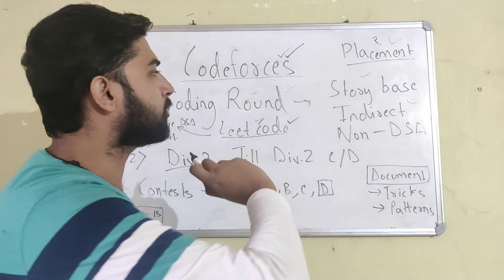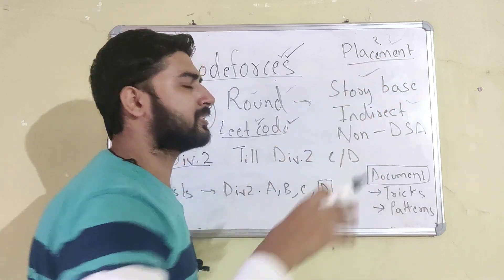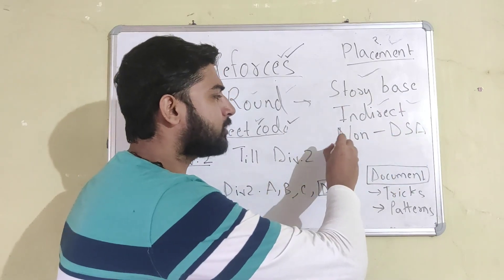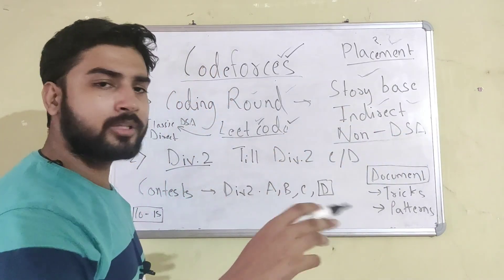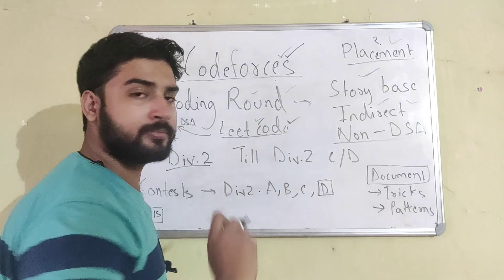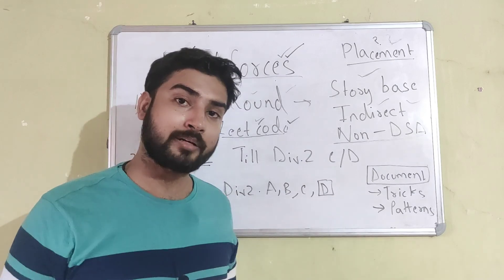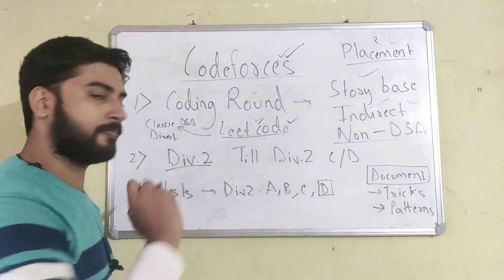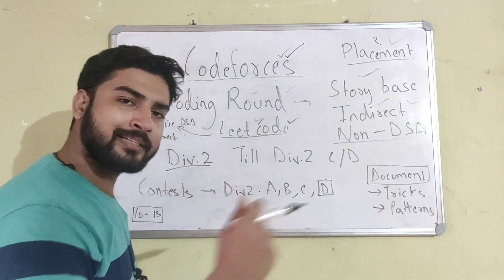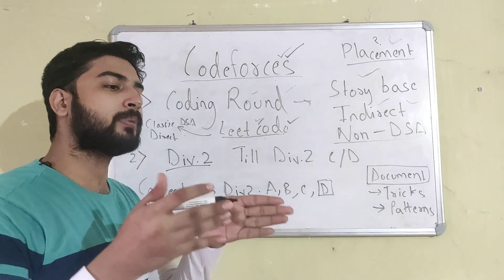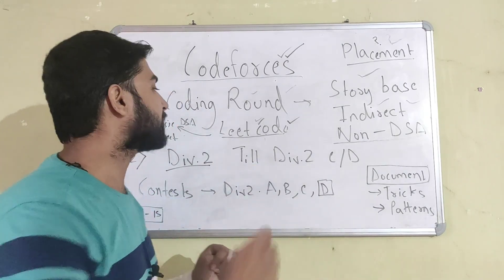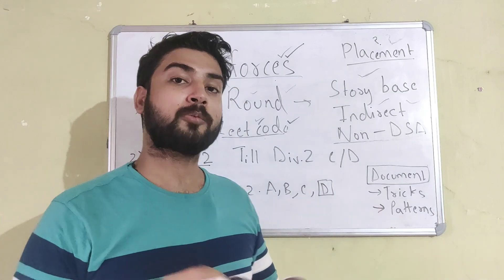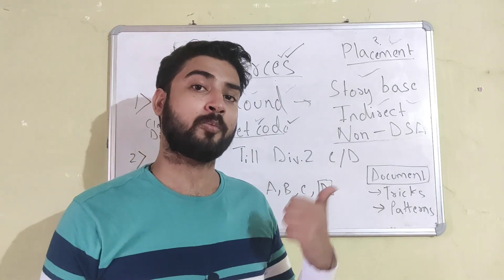The problems you see in coding rounds are generally story-based — the problems are indirect, nothing is direct, and they're generally non-classic DSA problems. On the flip side, on LeetCode you have direct problems like 'reverse a linked list' or 'invert a binary tree.' On LeetCode, there are direct classic DSA problems where you know you're given a linked list and have to apply a specific algorithm. But in the coding round, the problems are different — they're like the problems you find in competitive programming.